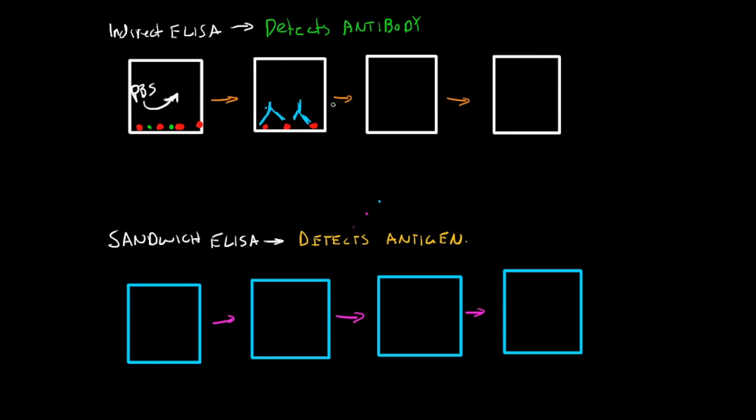You wash again, and then you add an enzyme that's conjugated to a secondary antibody. So we have our antibodies here. So here we add in more enzyme that's conjugated to a secondary antibody. So this one will be specific for your antibody. It's bound to the FC region, and it's conjugated to some sort of enzyme.